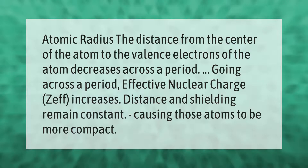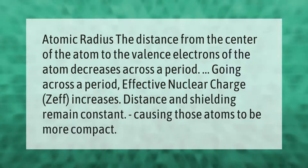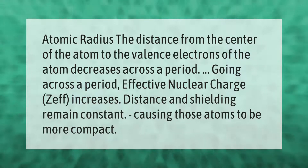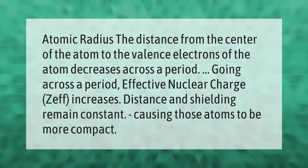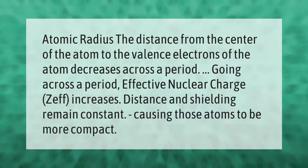Atomic radius — the distance from the center of the atom to the valence electrons — decreases across the period. Going across the period, effective nuclear charge (Zeff) increases while distance and shielding remain constant, causing those atoms to be more compact.